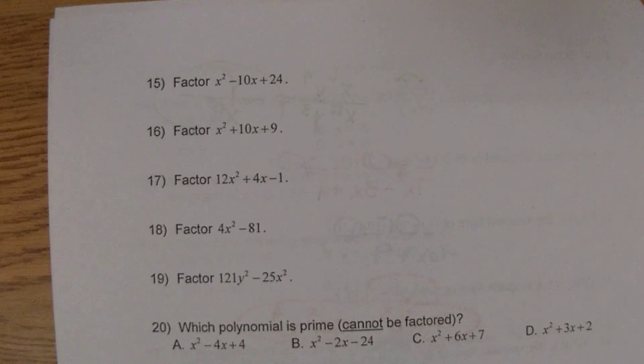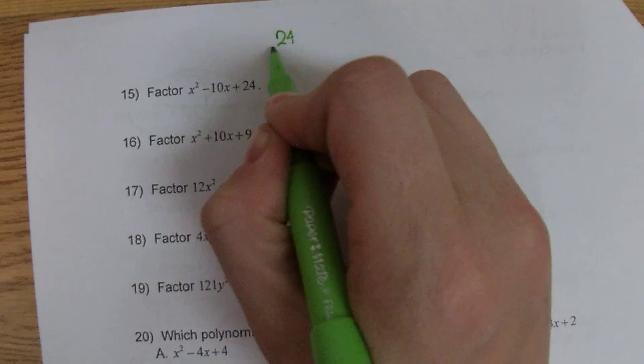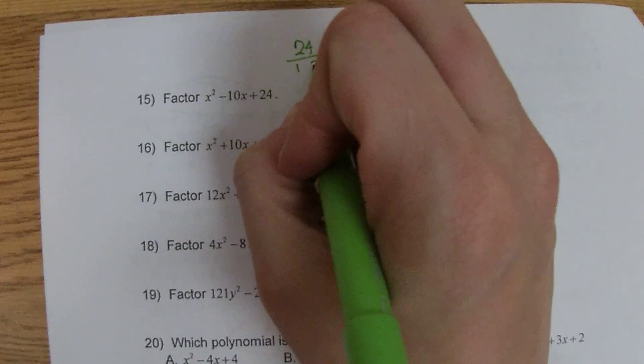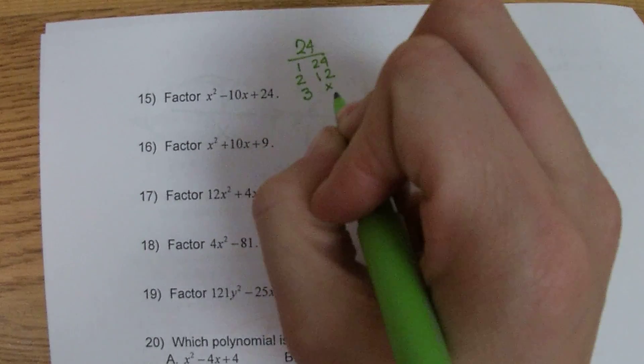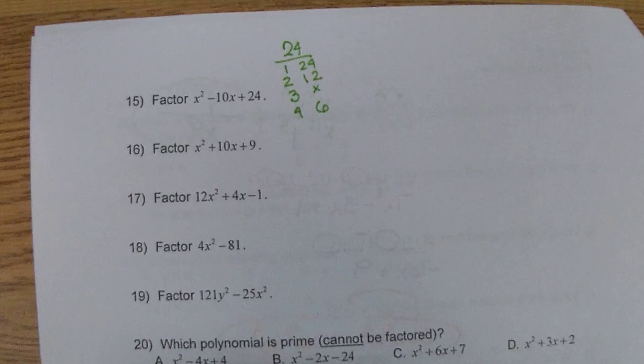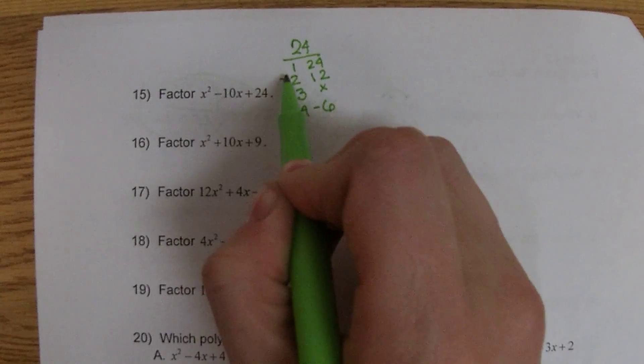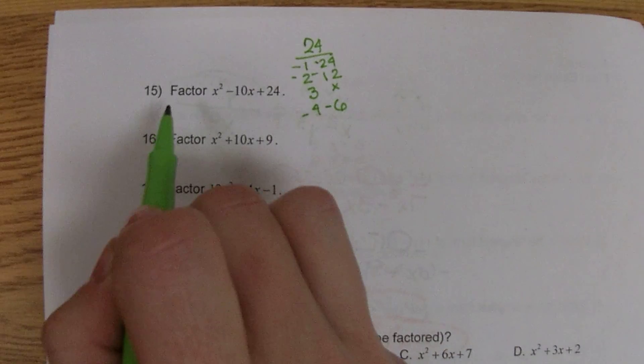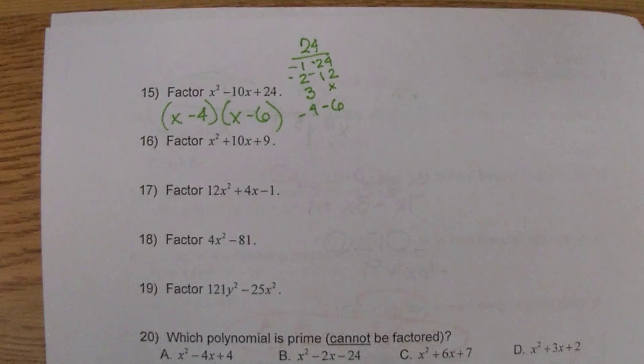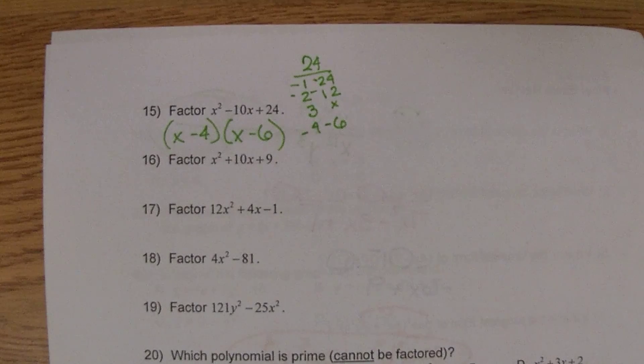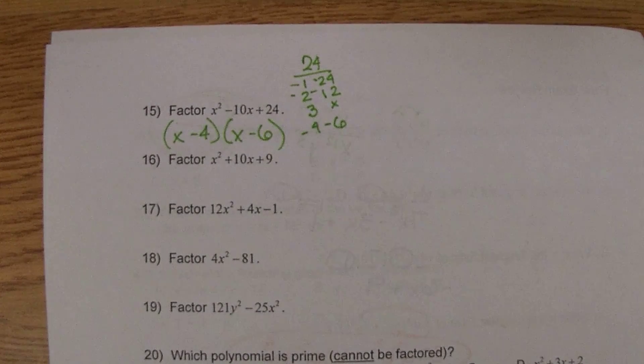Number 15 is a trinomial. There's no GCF, so we want multiples of 24 that will add up to negative 10. When this is negative and this is positive, we need both of them to be negative, so make sure you're careful with what you're picking. We need the x minus 4 and the x minus 6. You cannot do 2 and 12 because then one of them would be negative, and that would give you negative 24 when you multiply them together.